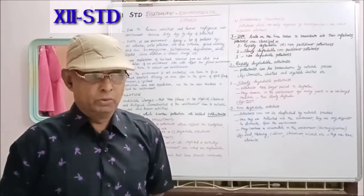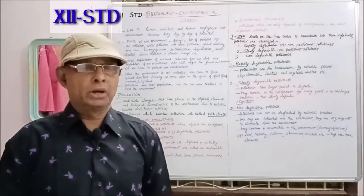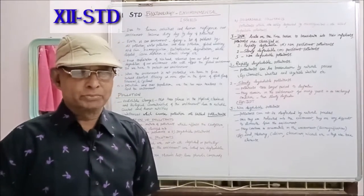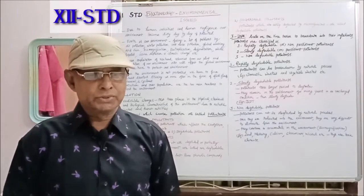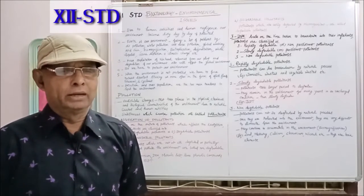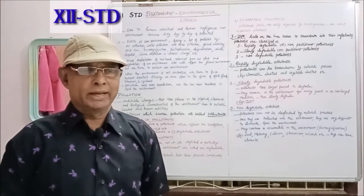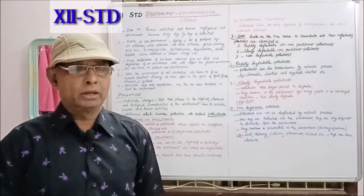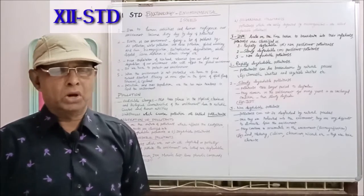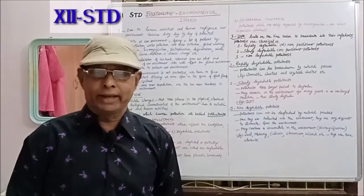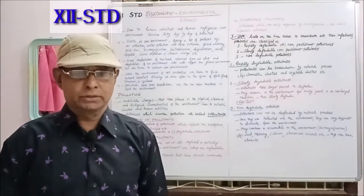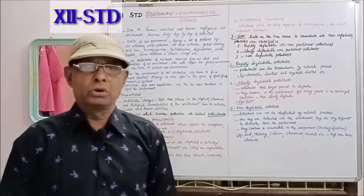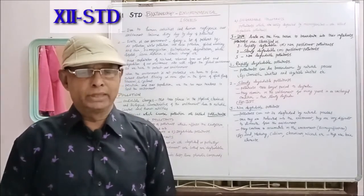What is pollution? Pollution is the undesirable changes that take place in the physical, chemical, and biological characteristics of the environment due to natural causes and human activities. Substances which cause pollution are called pollutants.